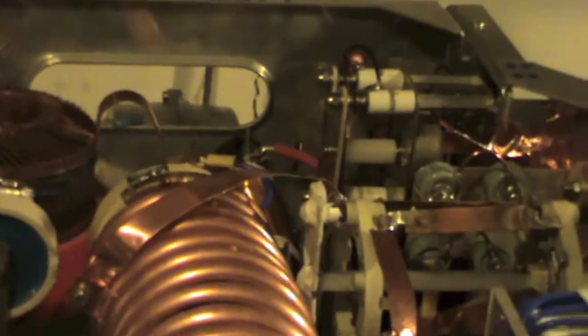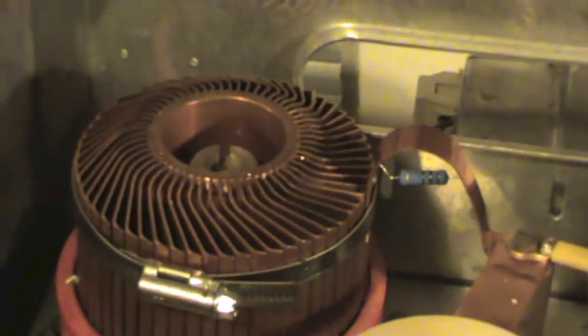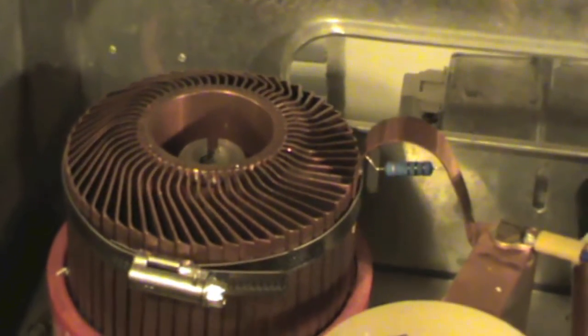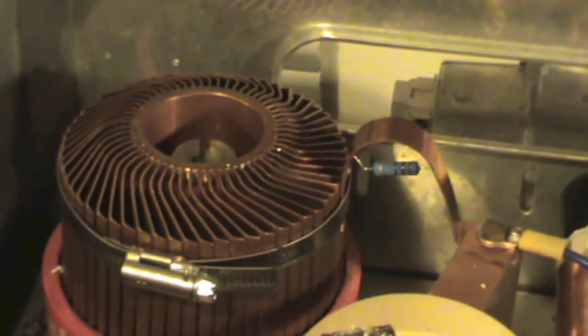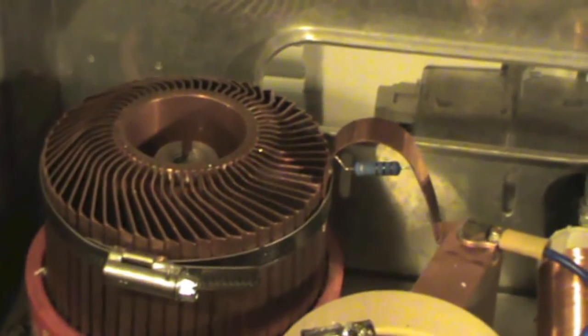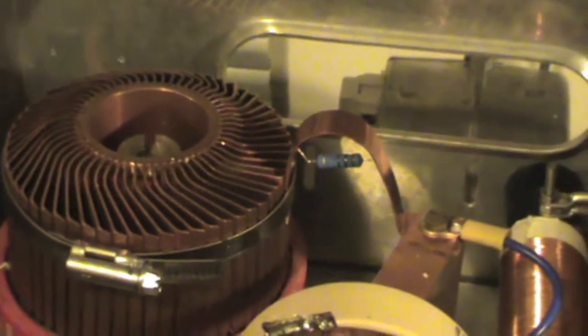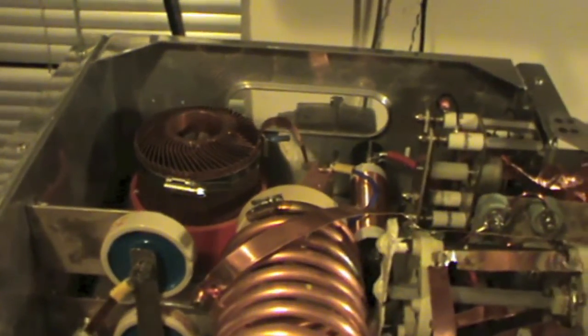So we'll start off at the back here, and that's the actual valve. You can see there's a big copper heatsink there. This valve has got a plate dissipation of about 1500 watts and it's quite a powerful triode.